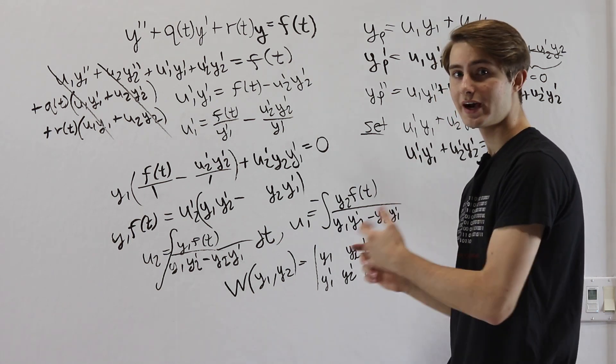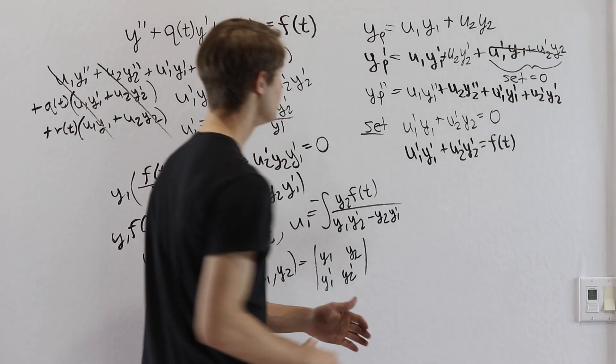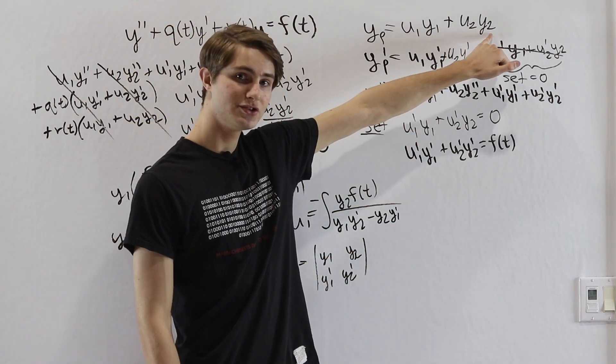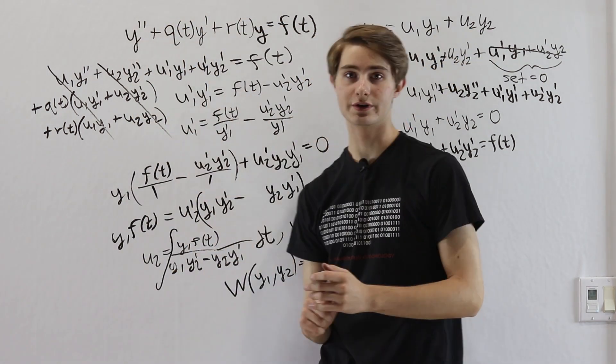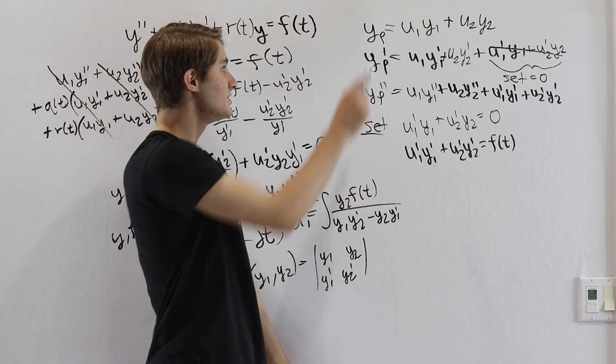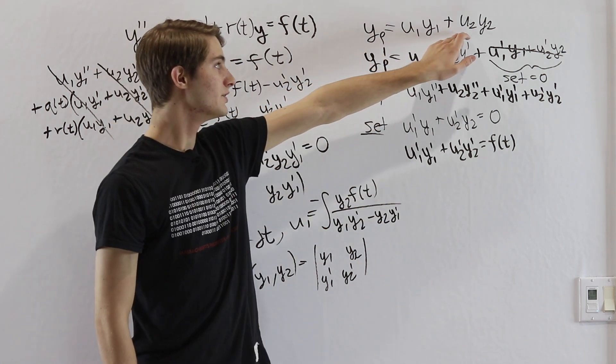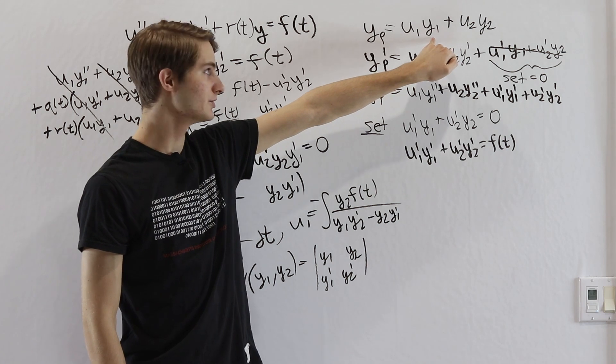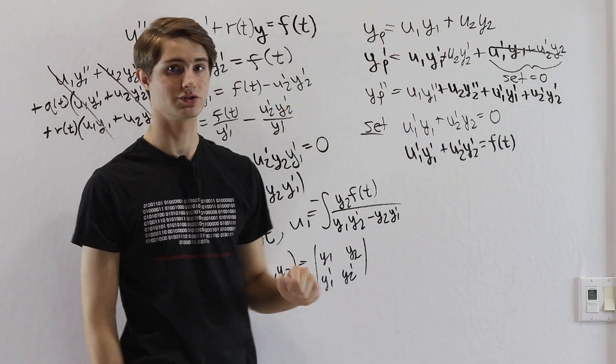So that is the entire variation of parameters method. It says that once we have two homogeneous solutions to our second order equation, we can set our particular solution equal to the sum of some function times that homogeneous solution for each of the two solutions.